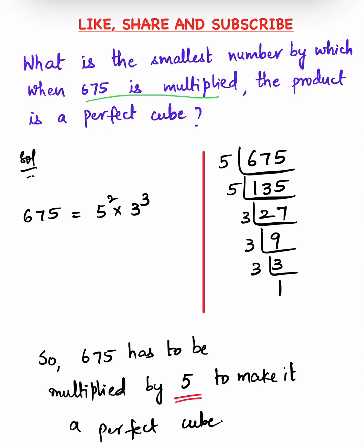Here we have to multiply a number with 675 such that it becomes a perfect cube and we have to find the smallest number.